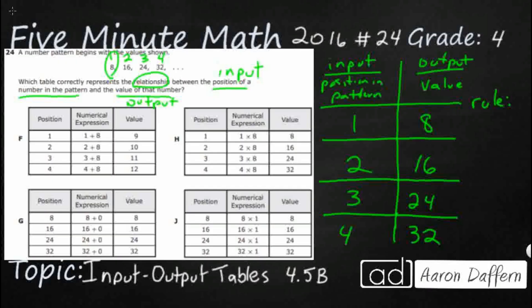Whenever we're getting larger, there's two different ways we can do it. We can either add or we can multiply. So if we wanted to add, we'd have to think: 1 plus what makes 8? Now that would be 1 plus 7 makes 8. But does 2 plus 7 make 16? No, it doesn't. 2 plus 7 makes 9.